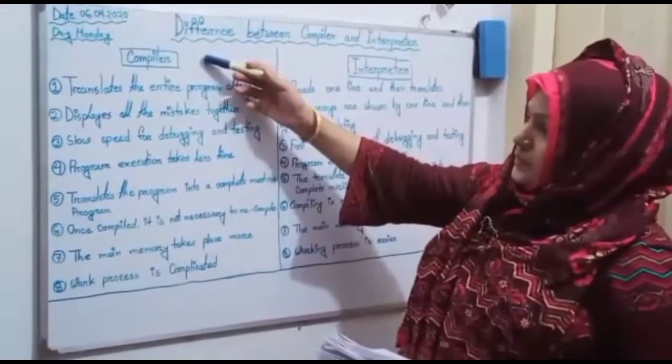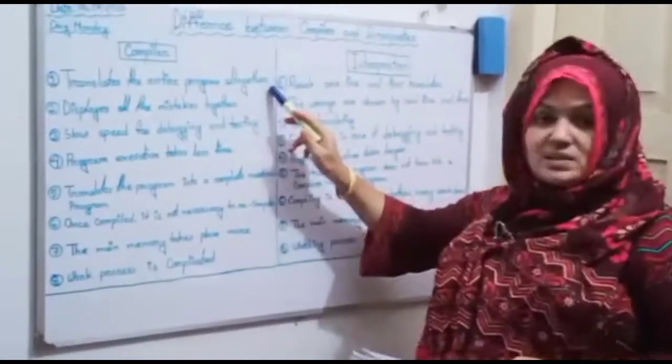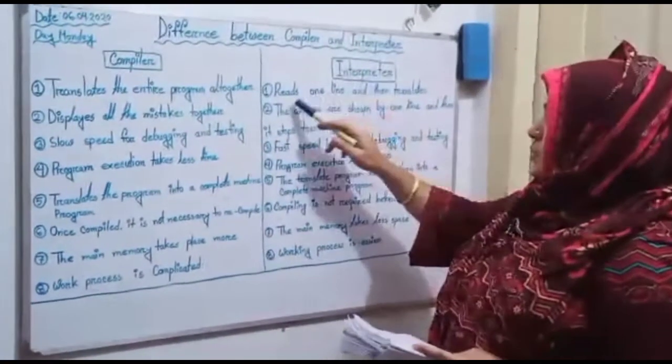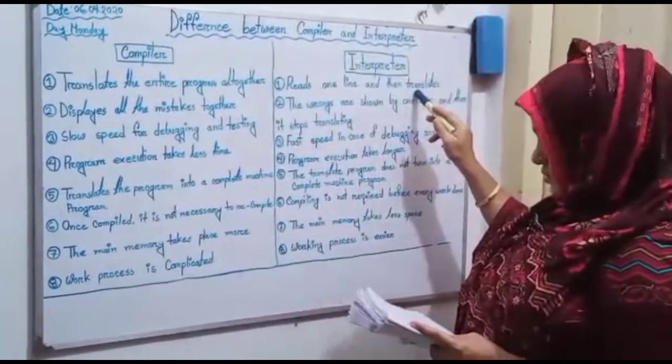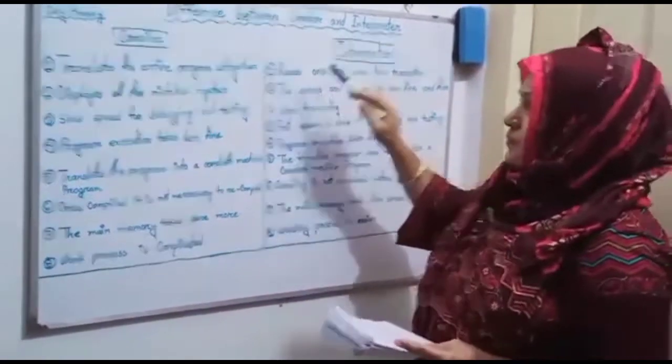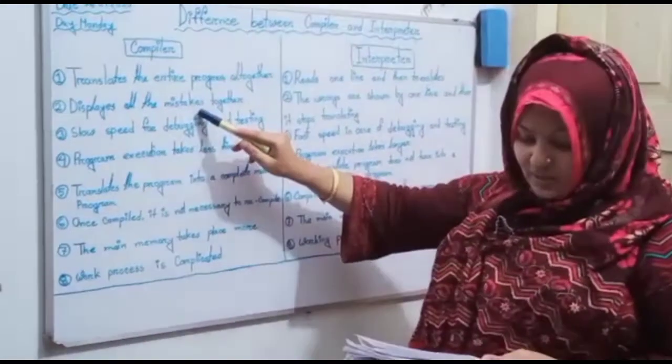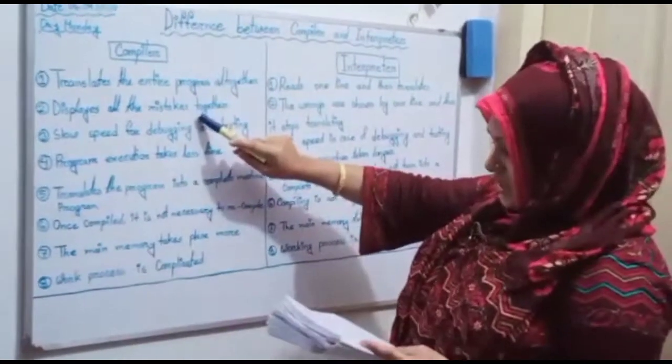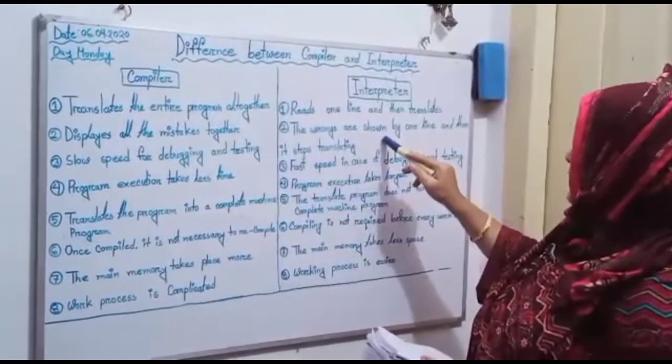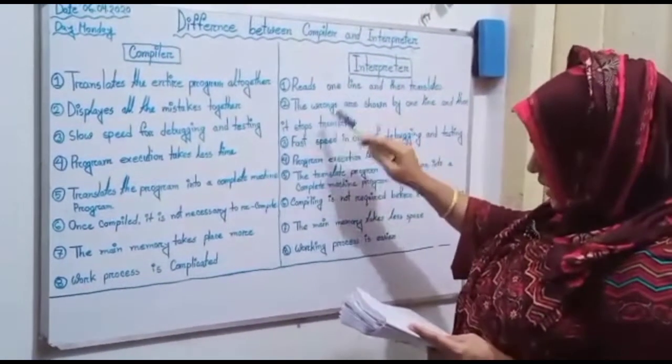First thing is that compiler number one: translates the entire program all together, that means it takes the entire program at a time. Interpreter number one: reads one line and then translates, that means it takes single line of code instruction at a time. Compiler number two: displays all the mistakes together, that means displays all errors at the same time after compilation. Interpreter number two: the wrongs are shown by one line and then it stops translating, that means displays error of each line one by one.